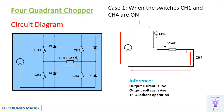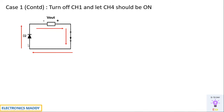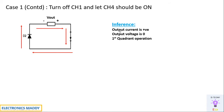Now I will turn off CH1 alone, while CH4 will still be conducting. According to the inductor's property, it does not allow sudden change in current. Previously it charged plus and minus; now it will reverse its polarity to ensure that the same direction of current flow is maintained — this is also according to Lenz's law. The minus terminal is directly connected to the cathode of diode D2, so D2 is forward biased and acts as a short circuit. Current is still positive — flowing in the same direction as per our convention — but the output voltage is 0 because it is a short circuit. So the inference is: output current is positive, output voltage is 0, which corresponds to first quadrant operation.